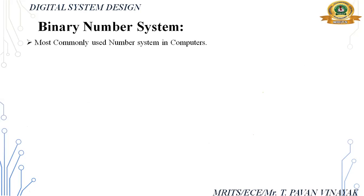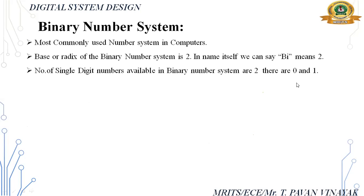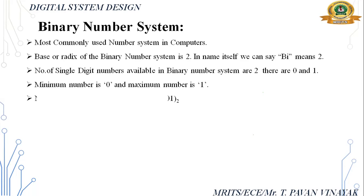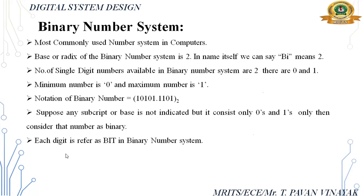Next is the binary number system, most commonly used in computers. The base or radix is 2. The number of single digits available are 0 and 1, so the minimum number is 0 and the maximum is 1. If a number consists of only 1s and 0s and no subscript is provided, we can consider it a binary number. Each digit in binary is referred to as a bit.